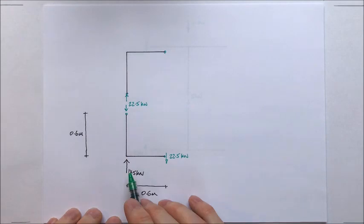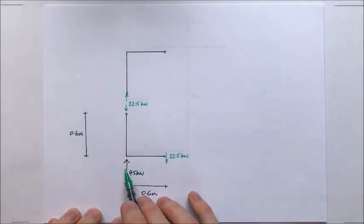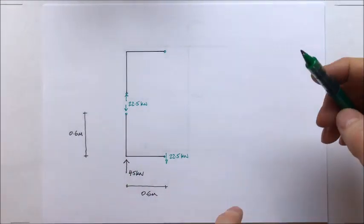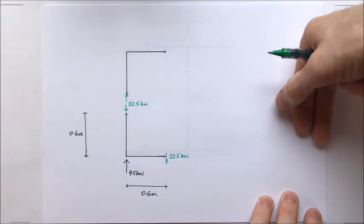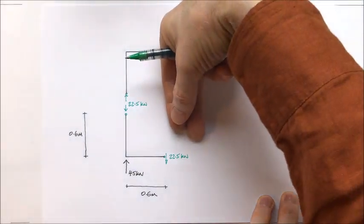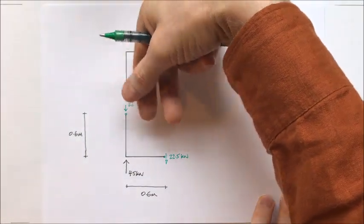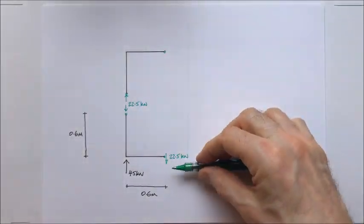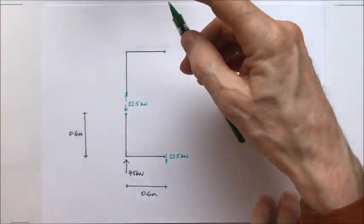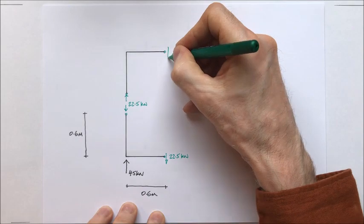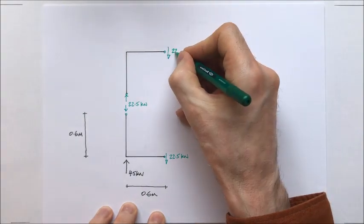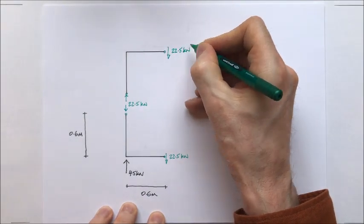Now I know that if I have a vertical reaction here of 45 kilonewtons then a total of 45 kilonewtons has been transferred along the bridge in shear and it will be 50-50. 22 and a half in the bottom chord, 22 and a half in the top chord. Let's add that in there, 22.5 kilonewtons.